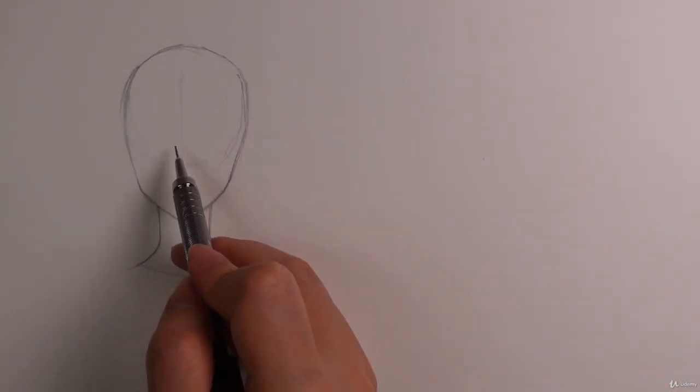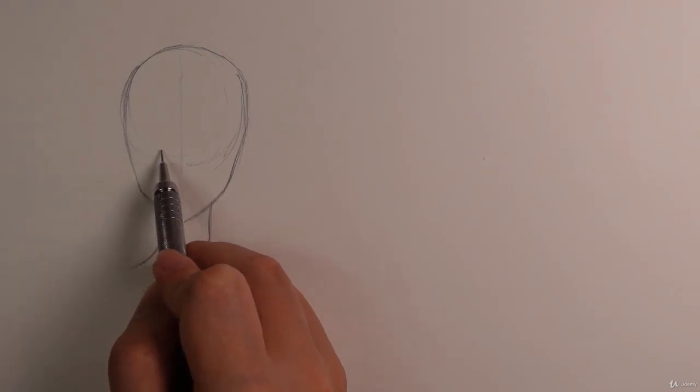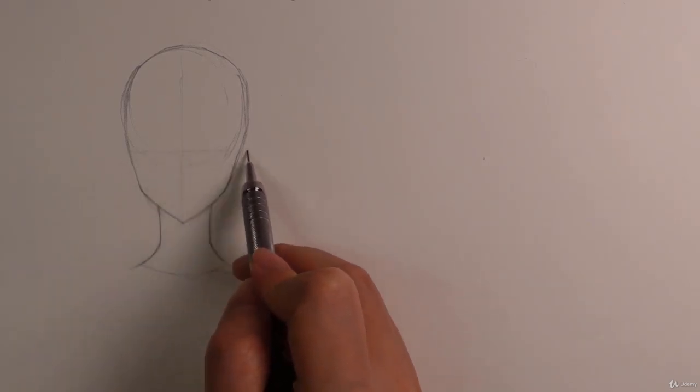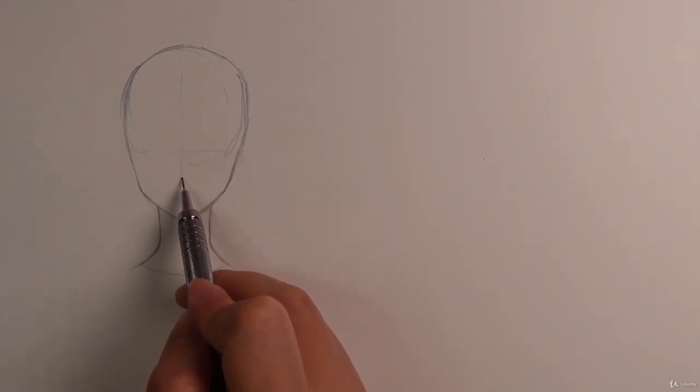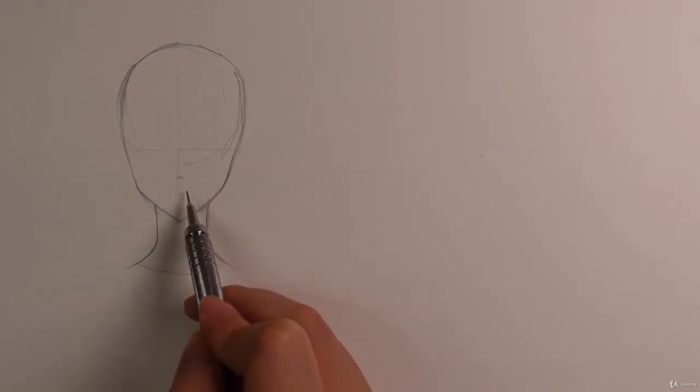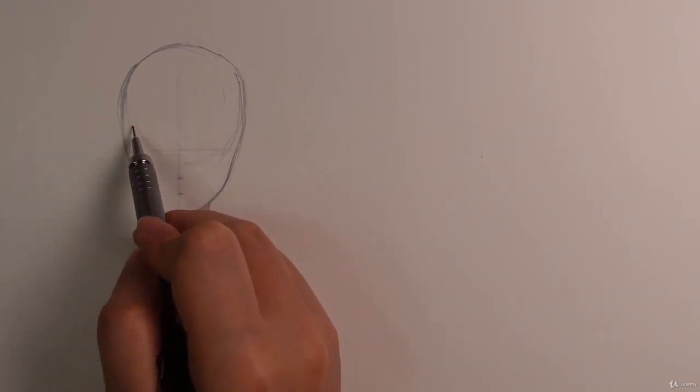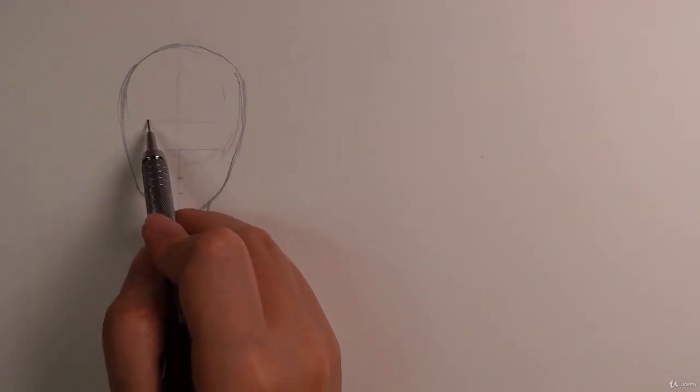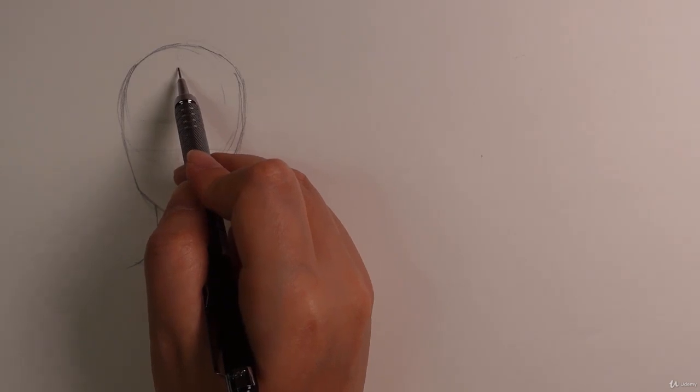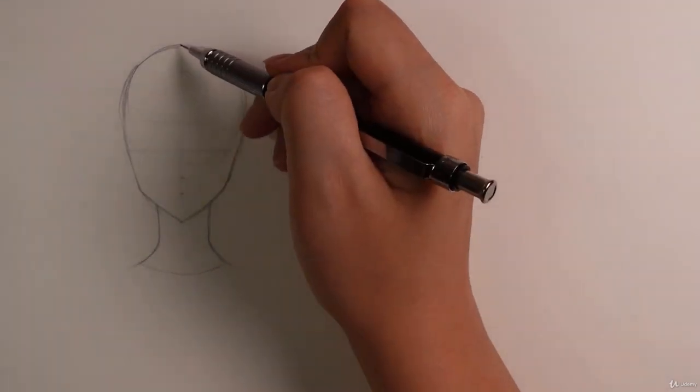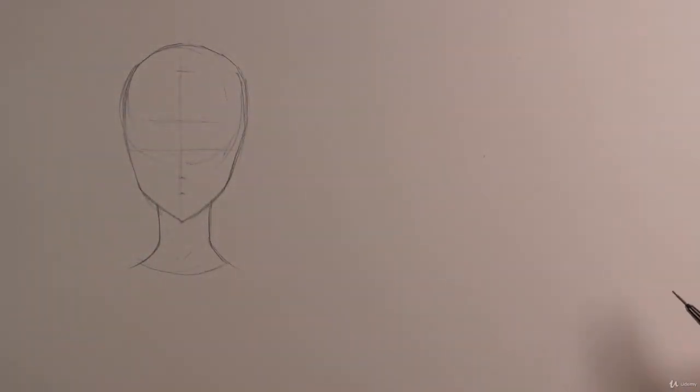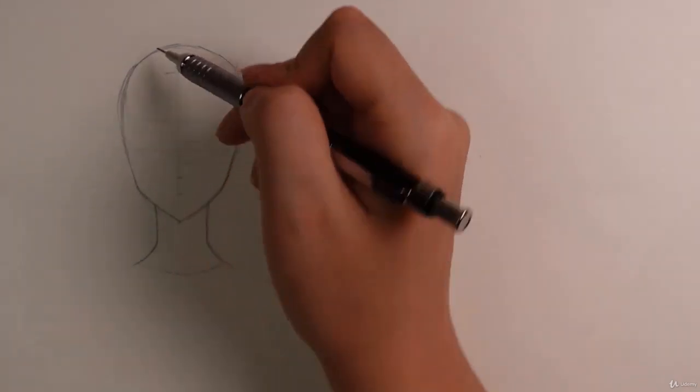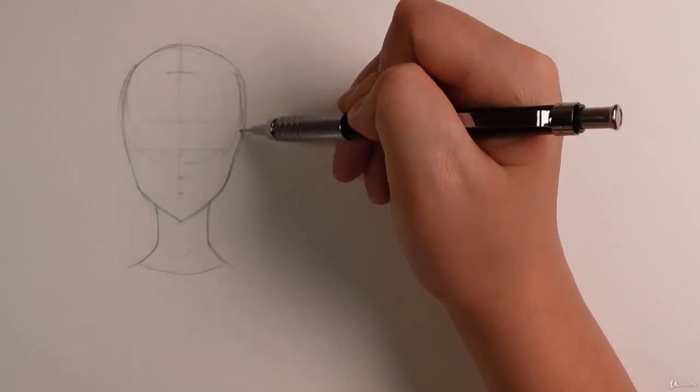So we can end it there for our first head. If we want to draw our proportion lines, we can go ahead and draw the eye line which is around the middle. Then our nose can be a little bit higher just to give it a cuter look, as well as the mouth can be a little bit cuter, so it's higher up. And then our eyebrow line can be a bit higher because we're going to make the eyes a bit larger, so it's going to be up here. And then our hairline starts up here. Make sure you give enough room for the scalp. So that is our first head.